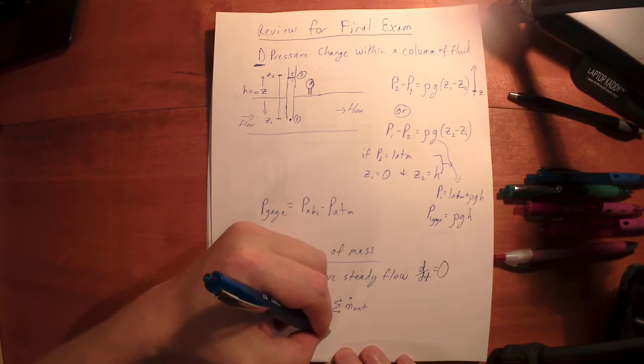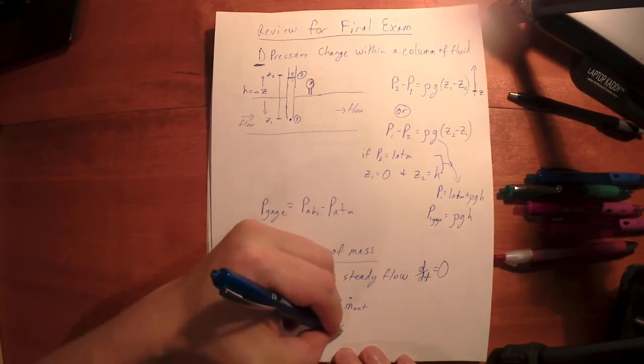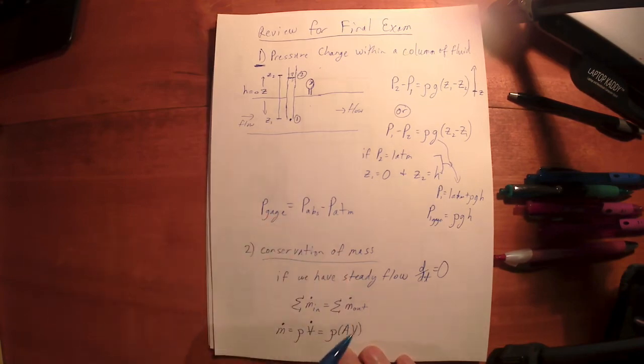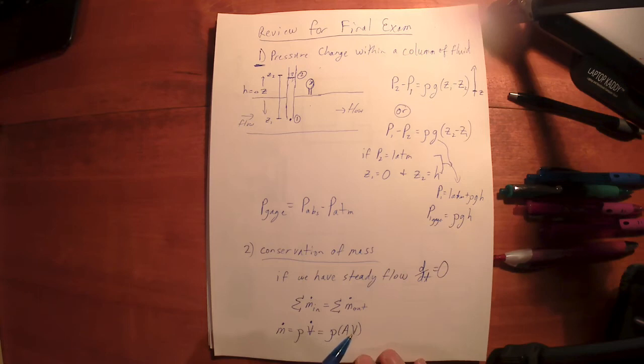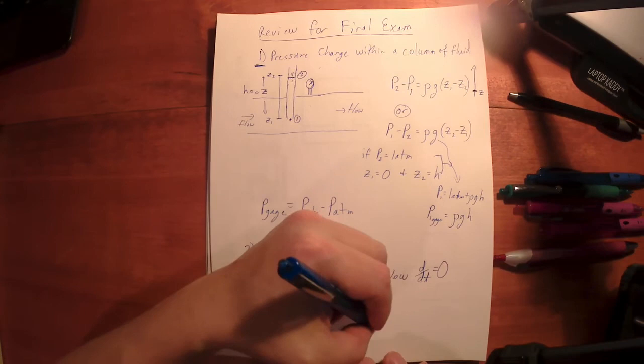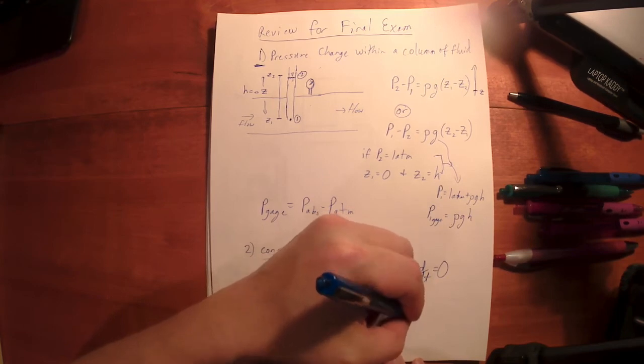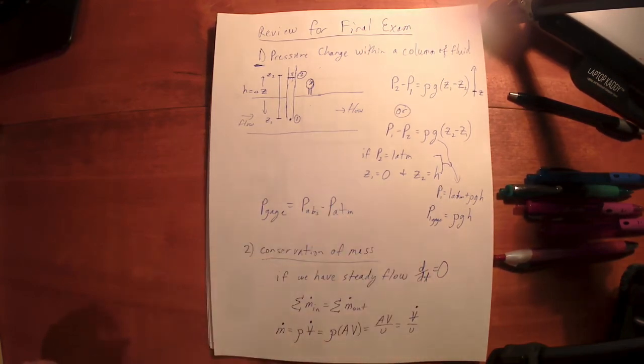If I take volume per time and multiply by mass per volume, I get mass per time. And then I can find the volumetric flow rate if I happen to know the cross-sectional area of the conduit and the average speed of the flow through that cross-section. The product of AV gives me V dot. And the reciprocal, sometimes if I'm dealing with gases or vapors, I may be dealing with the specific volume, the reciprocal of density.